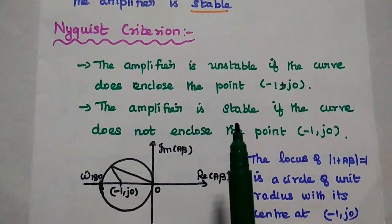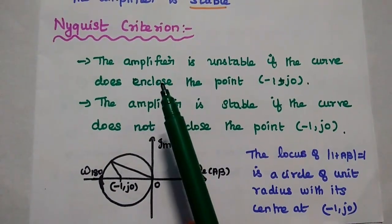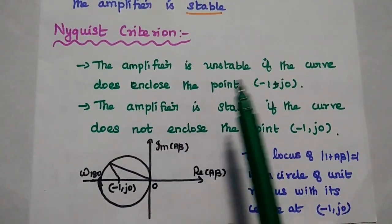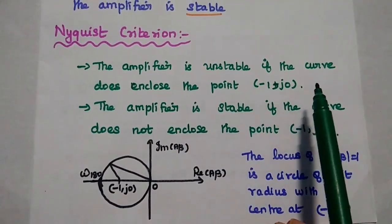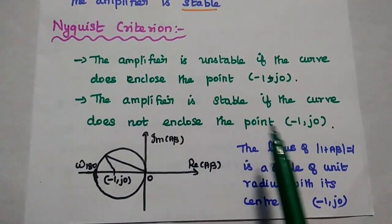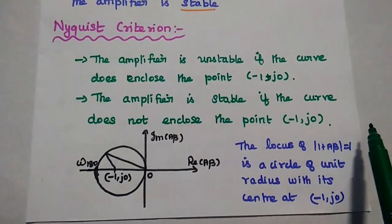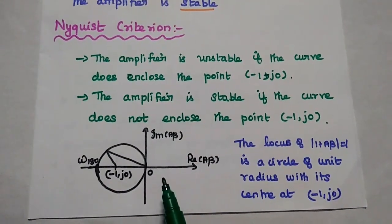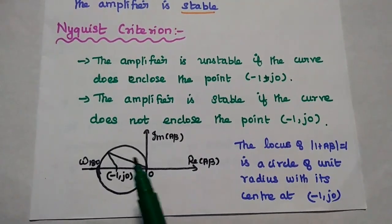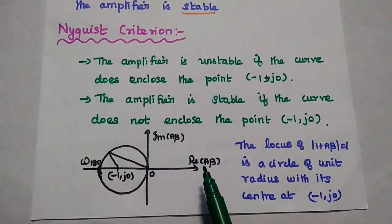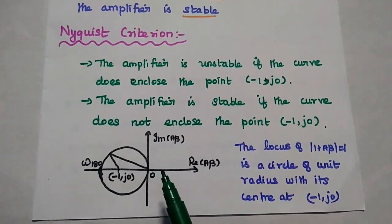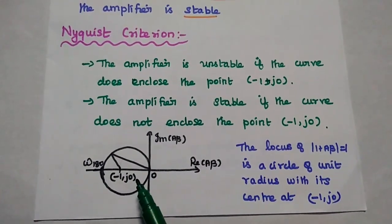The two conditions can be stated as follows: the amplifier is unstable if the Nyquist curve does enclose the point minus 1 comma j0, and the amplifier is stable if the curve does not enclose the point minus 1 comma 0. The locus of 1 plus A·beta, where |1 plus A·beta| equals 1, is a circle of unit radius centered at minus 1 comma j0.